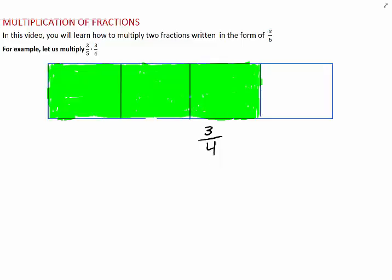2 over 5 times 3 over 4, as I mentioned earlier, means 2 fifths of 3 quarters. In order to obtain 2 fifths of 3 quarters, I will divide each shaded quarter into five equal parts, and then take two parts from each shaded quarter. And the result, I'm going to show you in the next diagram.